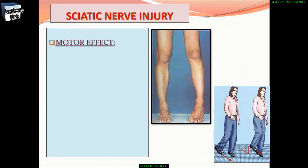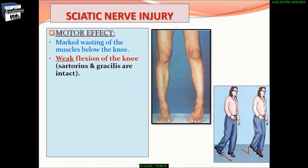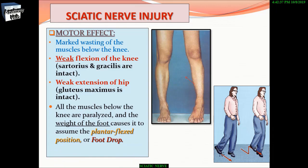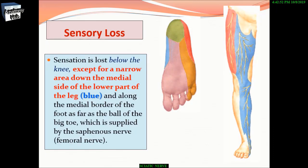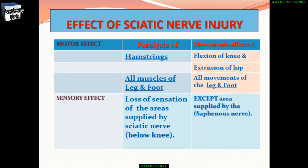Motor effects of sciatic nerve injury include marked wasting of muscles below the knee, weak flexion of the knee (sartorius and gracilis are intact), and weak extension of the hip (gluteus maximus is intact). All muscles below the knee are paralyzed, and the weight of the foot causes plantar flexion — foot drop and a steppage gait. Sensory loss occurs below the knee except for a narrow area down the medial side of the lower leg and along the medial border of the foot as far as the ball of the big toe, which is supplied by the saphenous nerve.